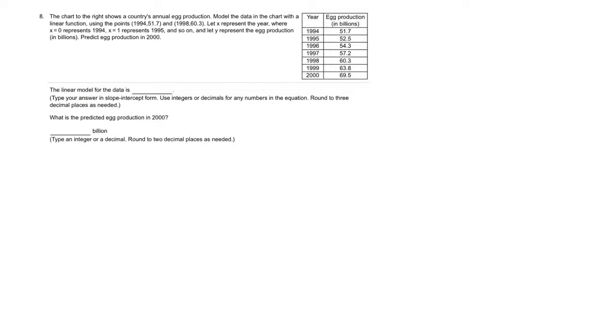All right, here's another question that's really the exact same question as the one before. The only difference with this one is that they give us years here, and they're saying let x represent the year where x equals 0 is 1994. So instead of 1994 here, I'm going to write 0 and 51.7. And then this date here, 1998, that's 4 years after 1994, so that would be 4. So the year would be 4, and the number would be 60.3. So now I need to find the slope. y2 minus y1 over x2 minus x1. So x1, y1, x2, y2. Plug your numbers in, come out with your slope.